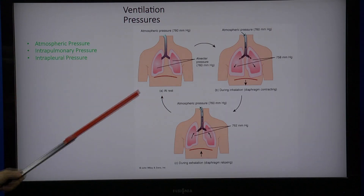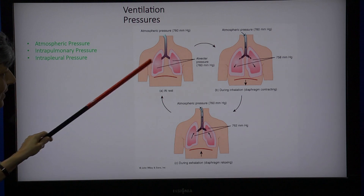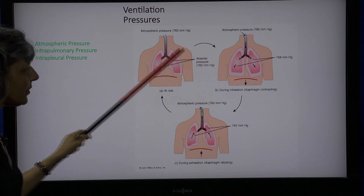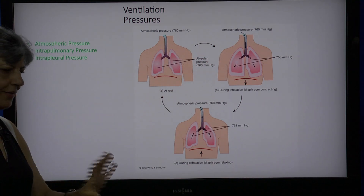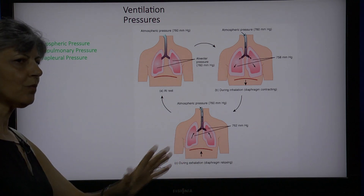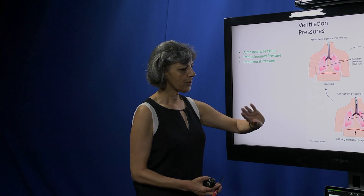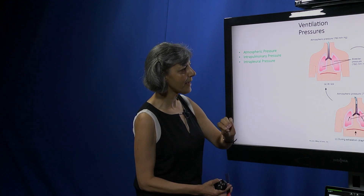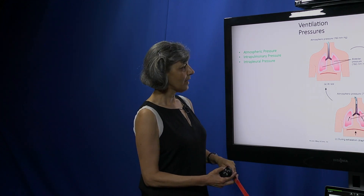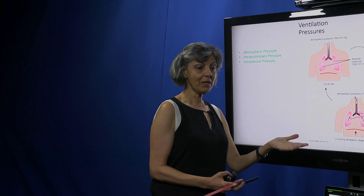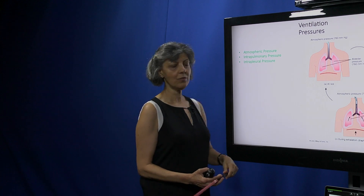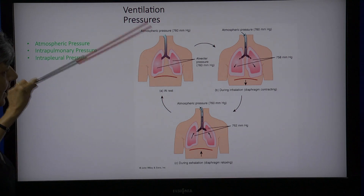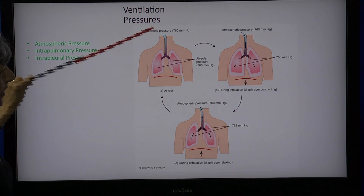The second pressure that works in the process of ventilation is the intrapulmonary pressure — the pressure inside the lungs, sometimes called intra-alveolar pressure. This pressure will differ and the difference is always compared to atmospheric: it might go lower by one or two mmHg, or higher by one or two mmHg compared to atmospheric. At rest, the two pressures are equal and there is no air going in or out of the lungs.